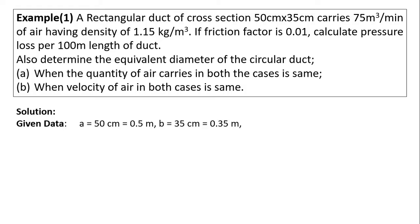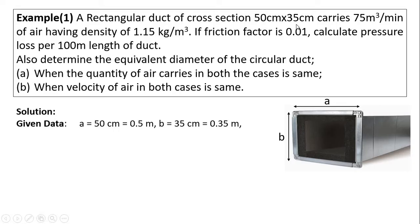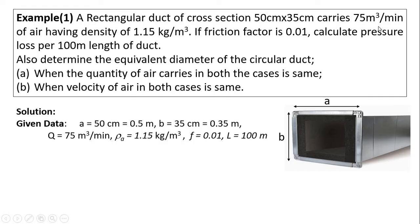First we will write the given data. The rectangular duct has larger dimension a = 50 cm = 0.5 m and shorter dimension b = 35 cm = 0.35 m. Volume flow rate of air through the duct is Q = 75 m³/min. Density of air rho = 1.15 kg/m³. Friction factor f = 0.01 and the length of duct is 100 m.